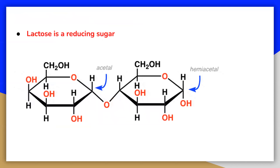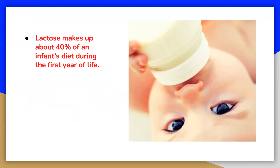Lactose is a reducing sugar composed of one molecule of galactose and one molecule of glucose joined by a beta-1,4 glycosidic bond. These two monosaccharides are obtained from lactose by hydrolysis or the catalytic action of the enzyme lactase. Certain bacteria can metabolize lactose, forming lactic acid as one of the products. This reaction is responsible for the souring of milk.